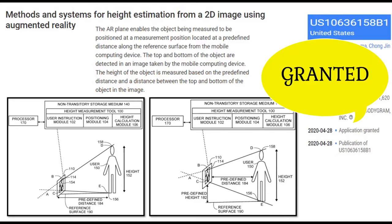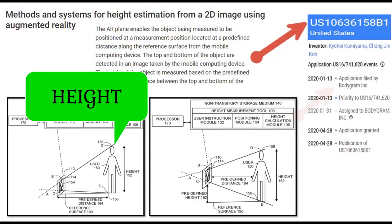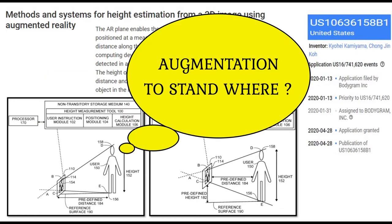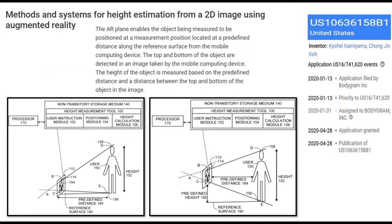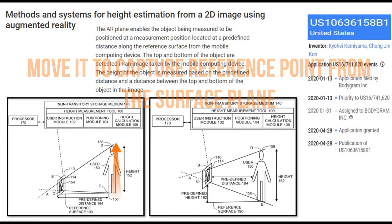Let's start with the invention summary followed by the inventive step. The invention is to find the height of an object or a person. For finding the height, there are a set of augmentations done in real time. The first augmentation is an instruction for positioning the object at a predefined distance from the reference plane, and secondly, displaying the height.